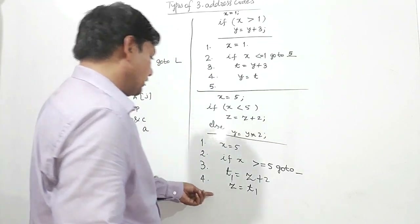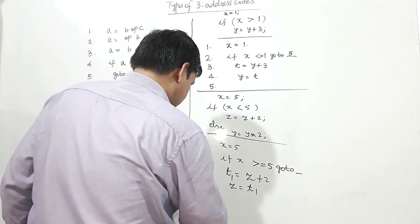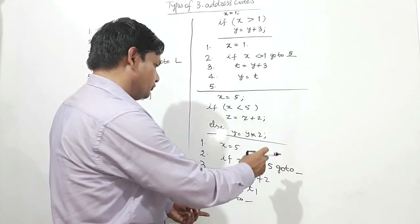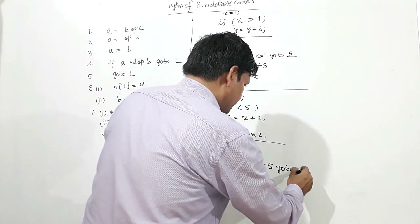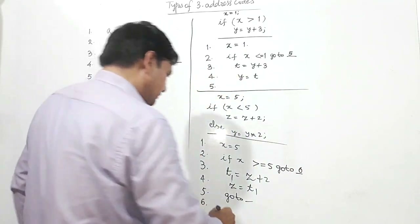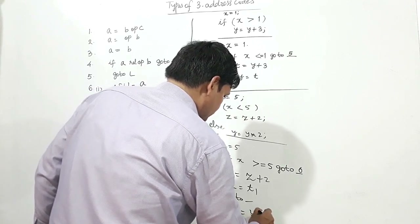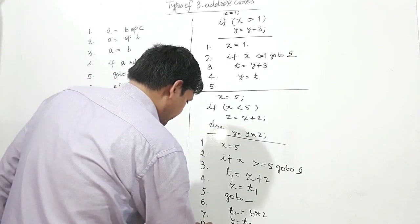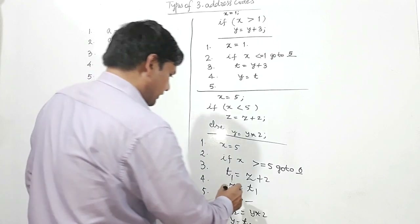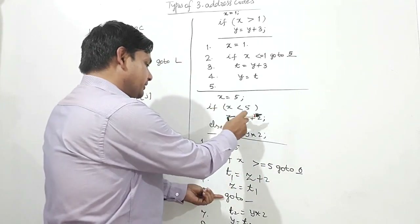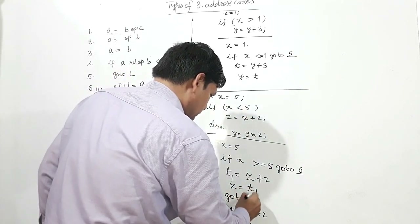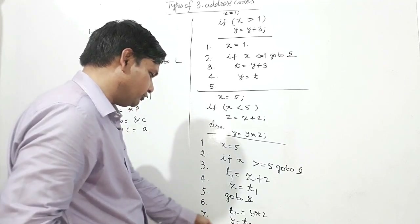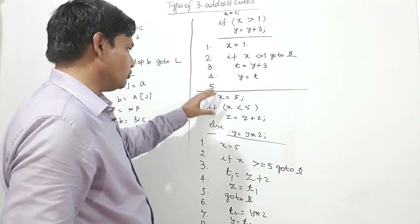After completing that, line 5: go to line 6. If X is greater than or equal to 5, control shifts to line 6 where T2 is assigned Y times 2, and Y is assigned by T2. At line 8, the program terminates. If this loop is executed, go to 8. This is the three address code for this statement.